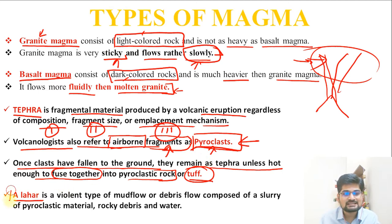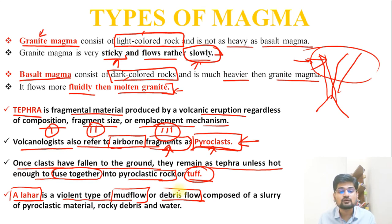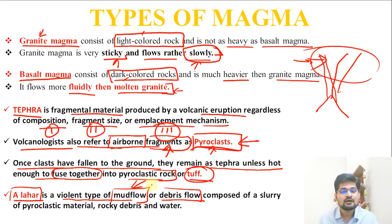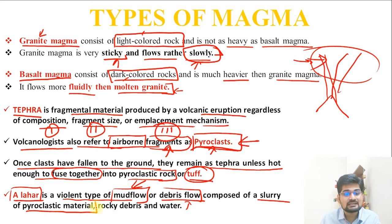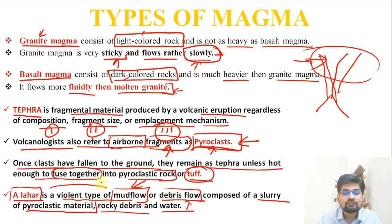Lahar is a violent type of mud flow or debris flow composed of a slurry of pyroclastic material, rocky debris, and water. It is basically an entire volcanic flood. We will learn about mud flow and debris flow in detail when we study mass wasting in denudational processes in the lectures to come.